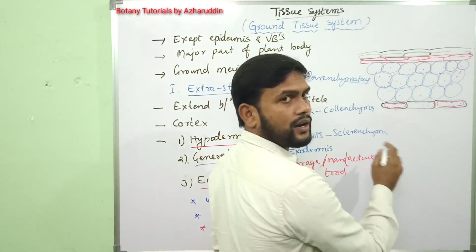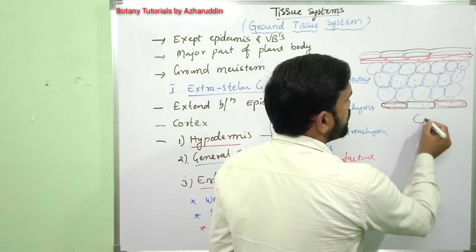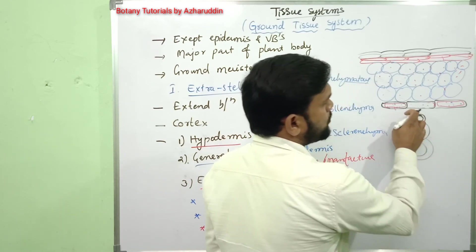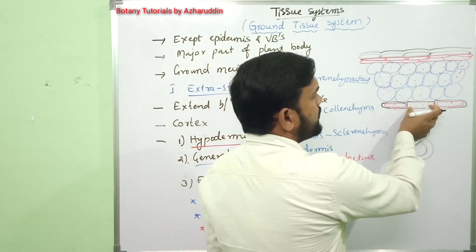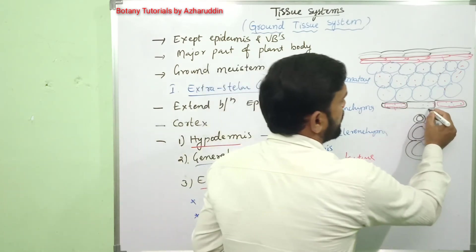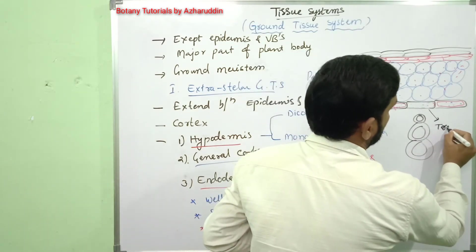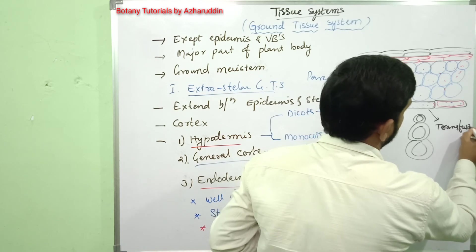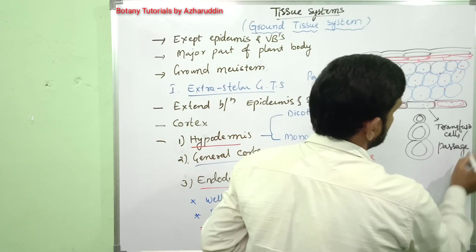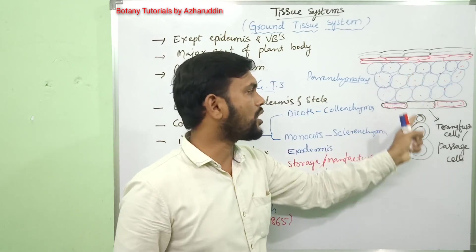Casparian bands are absent in endodermal cells which are opposite to the protoxylem. The cells present opposite to the protoxylem do not possess Casparian bands. These cells are called transfusion cells, otherwise also called passage cells. They help in the entry of water from cortex to xylem.